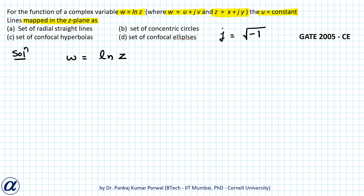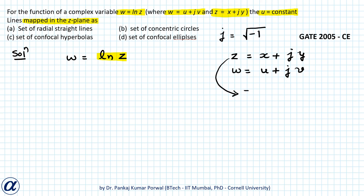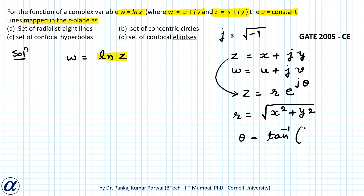Our function is w equals to ln(z). Since our function is log(z), rather than working in the Cartesian form of the complex number, I will work with the polar form: z equals to r·e^(jθ), where r equals to square root of x squared plus y squared, and θ equals to tan inverse of y by x.